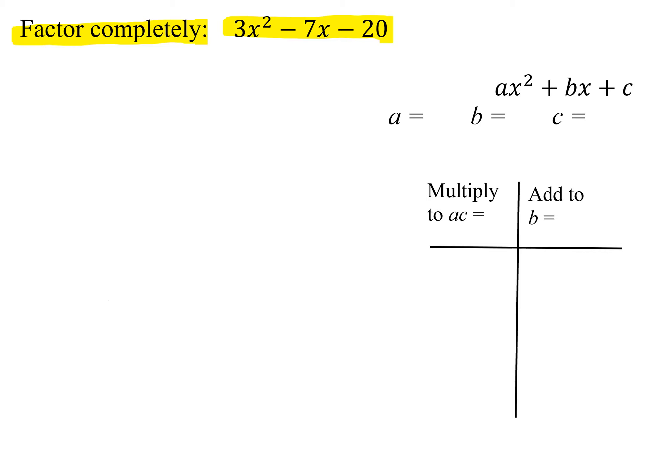With every factoring problem, step one is: is there a greatest common factor? As you can see from our polynomial, all terms do not have an x, so there's no x in common. How about the numbers? Well, 3 doesn't divide into negative 7, therefore they don't have any numerical common factors.